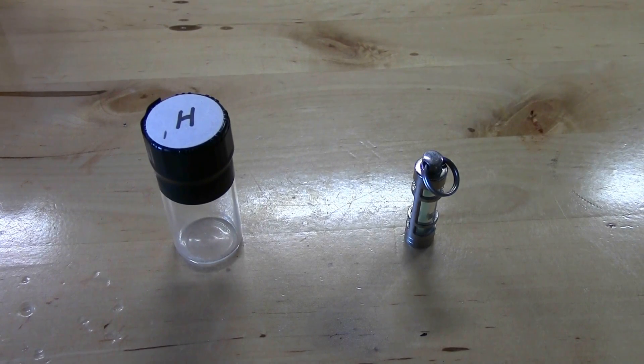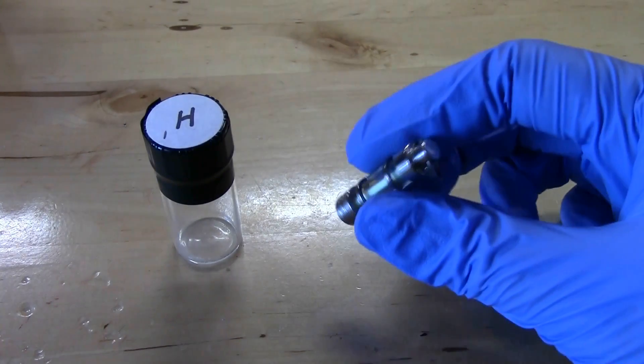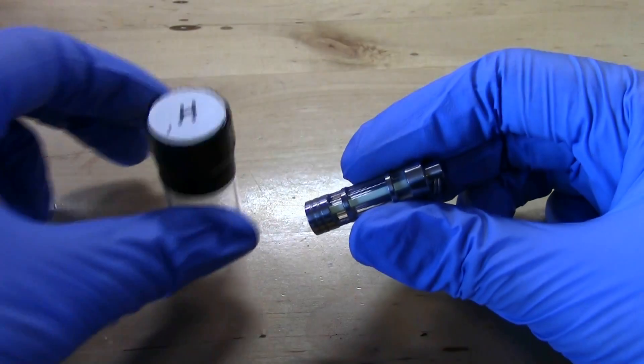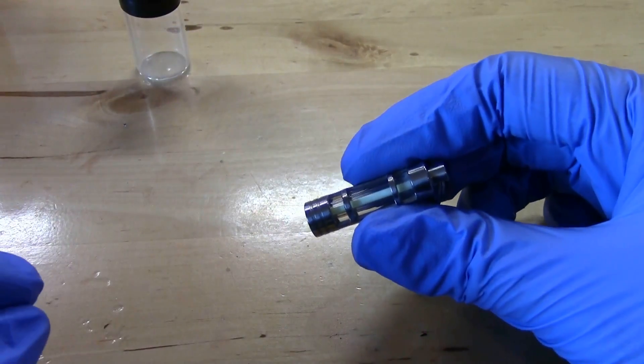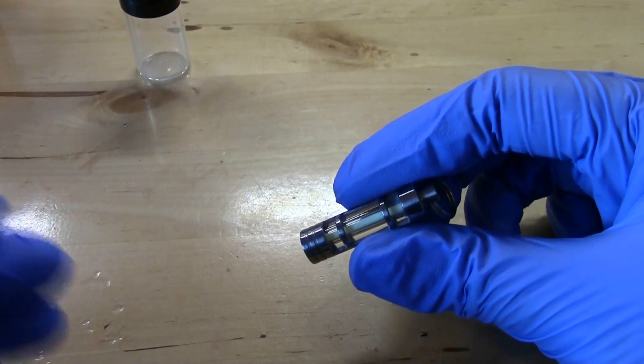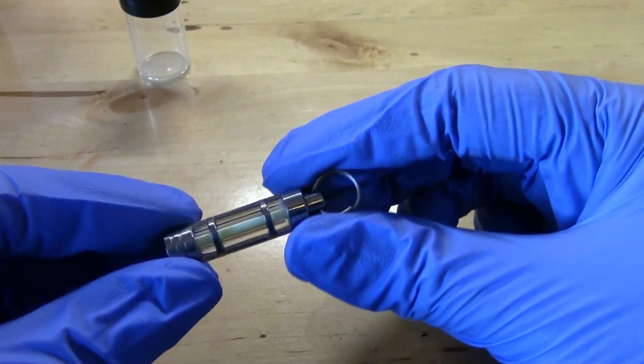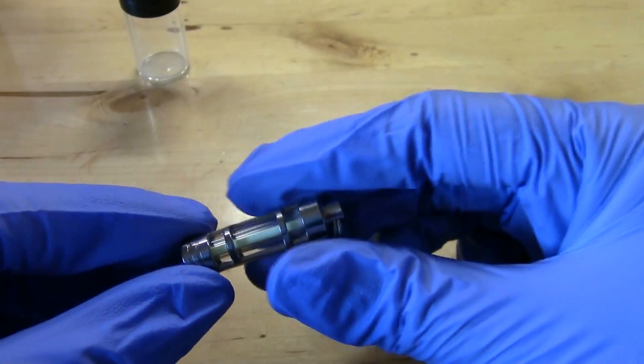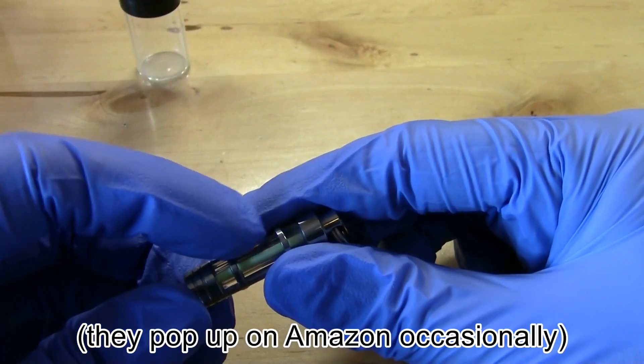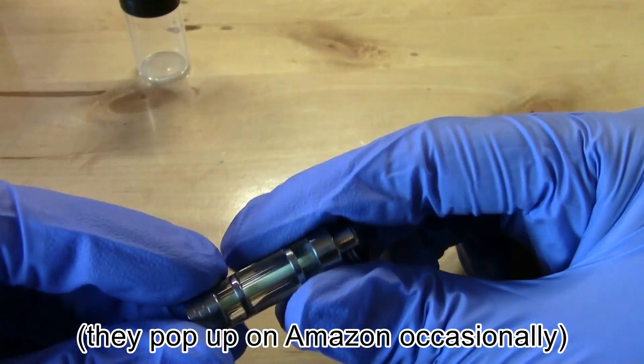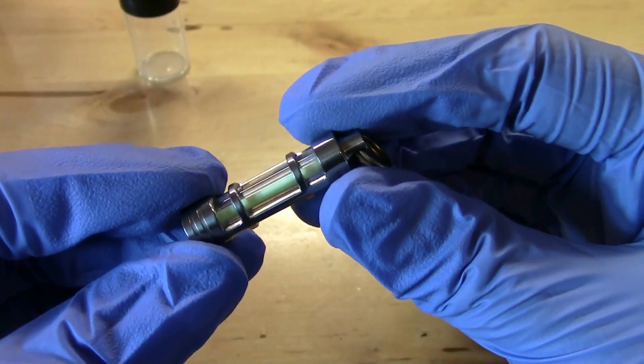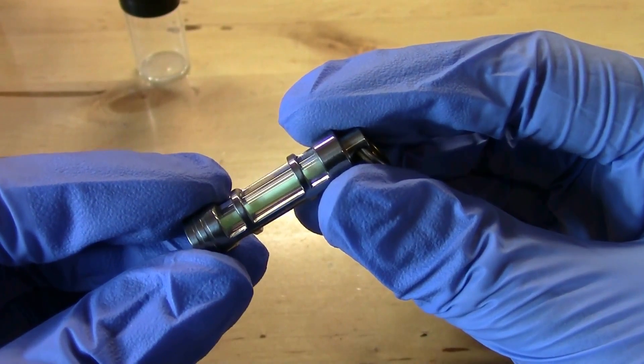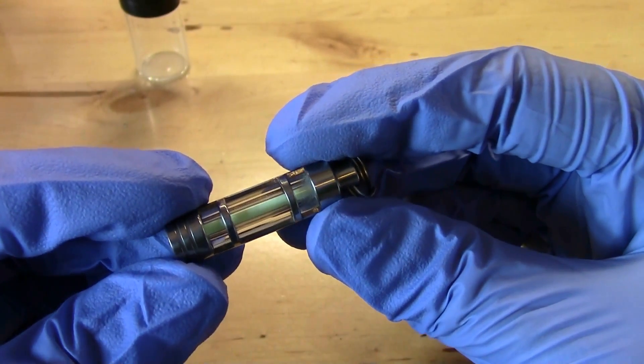There's protium, deuterium, and I actually have the third one, which is tritium. Tritium is radioactive, so it very slowly decays. This is a keychain that's got a very tiny amount of tritium gas inside of it. You can see there's a little vial in the center that looks green because it's got a coating of phosphor that changes the radioactive emissions of the tritium into visible light.